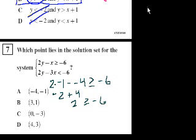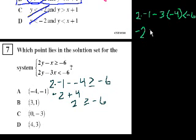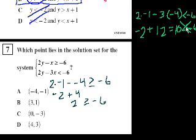Now let's check the second equation for (-4, -1). 2 times y = 2 times -1, minus 3 times x = minus 3 times -4. That gives -2, and 3 times 4 is 12, so it's plus 12 — negative times a negative is positive. That equals +10, which is not less than -6. So the first point does not work.